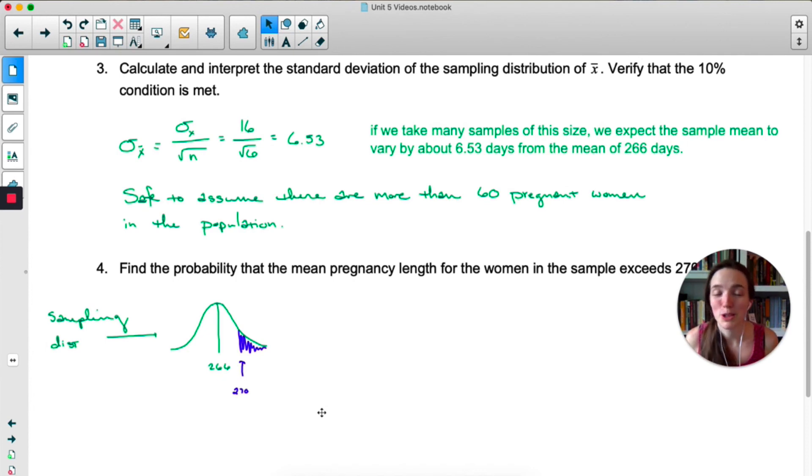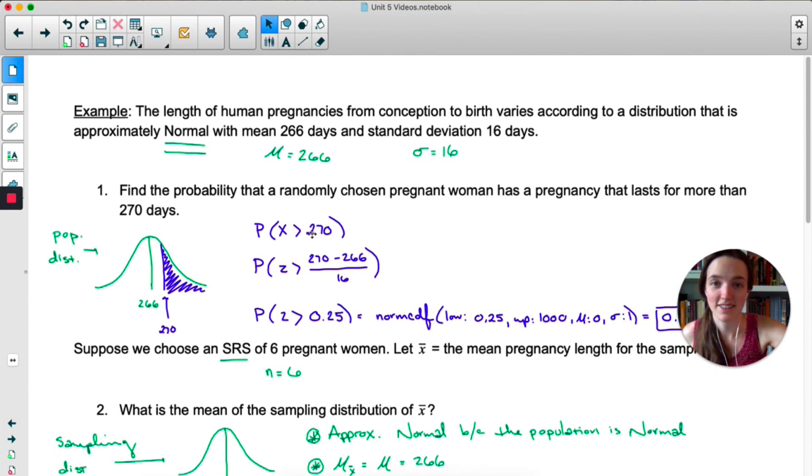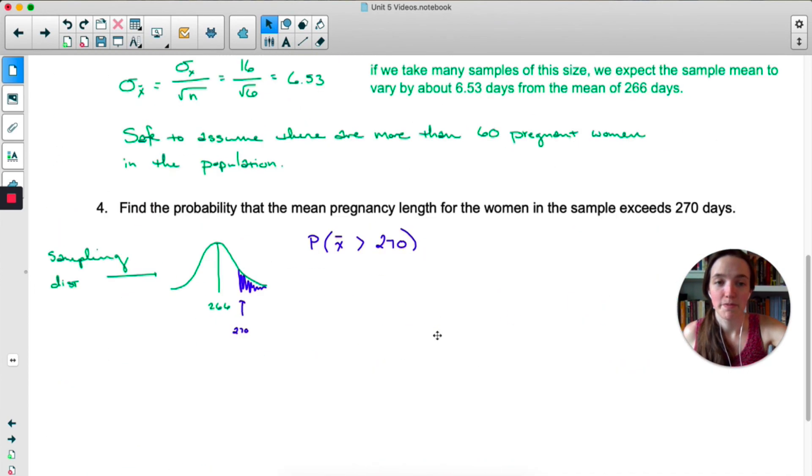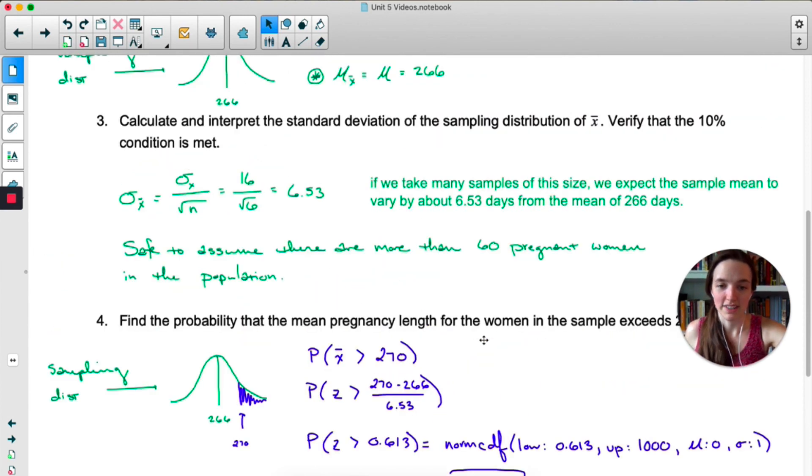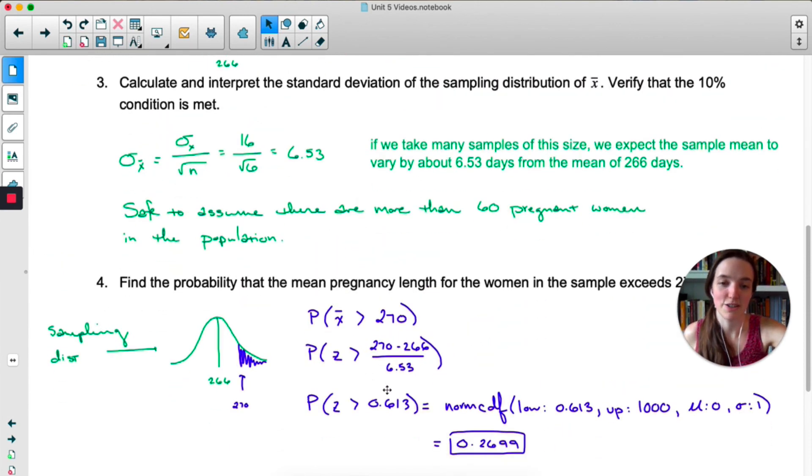Then I write out in symbols what I'm trying to find. The probability that x-bar is greater than 270, this time I'm dealing with x-bar, not x. This was a single randomly selected woman. This is the mean of a sample of women. From there, we are calculating a z-score. Notice I'm using the standard deviation from the sampling distribution, not from the population, norm CDF, yadda yadda yadda.